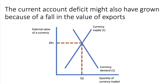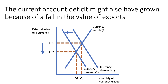The current account deficit might also have grown because of a fall in the value of the products that a country exports. Perhaps, for example, you're a major exporter of a primary commodity — copper, zinc, or cocoa. If your exports take a hit and the value of your exports falls, that decreases the demand for your country's exports and the demand for your country's currency. So you could model this using an inward shift of currency demand. Either way, the external value of the currency would fall. Important here to label the axes properly: the external value on the y-axis, the quantity of currency traded on the x-axis.